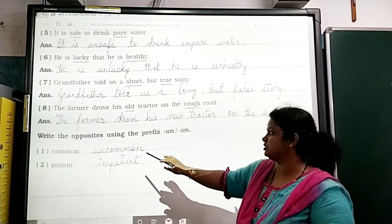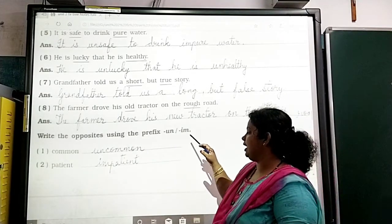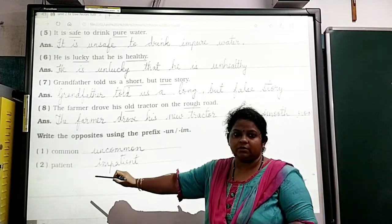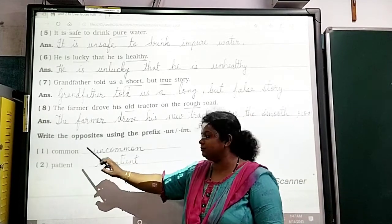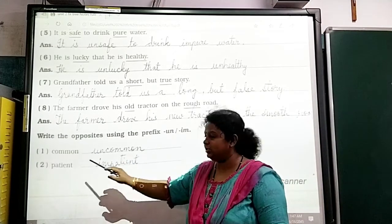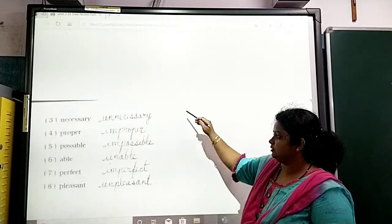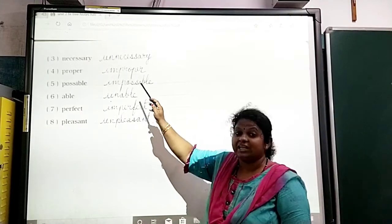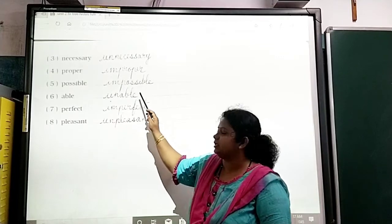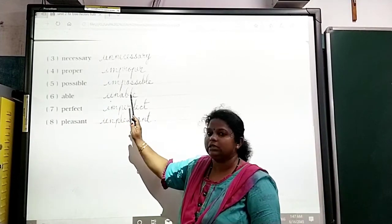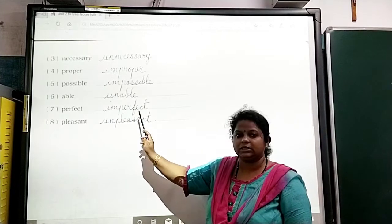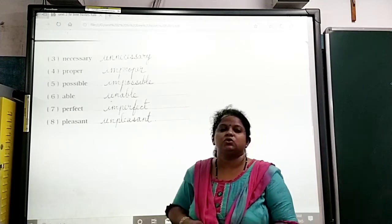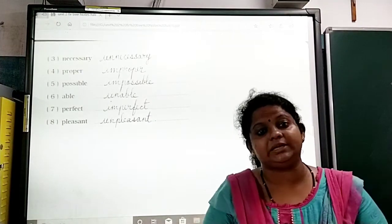The next question: Write the opposites using the prefixes un- and im-. Common — uncommon. Patient — impatient. Necessary — unnecessary. Proper — improper. Possible — impossible. Able — unable. Perfect — imperfect. Pleasant — unpleasant. Children, write these notes neatly in your workbook.